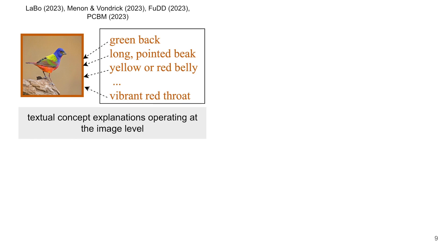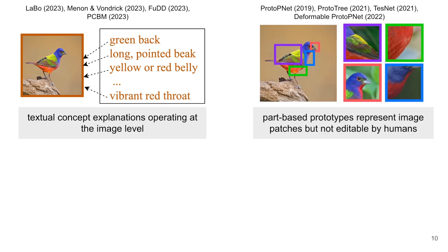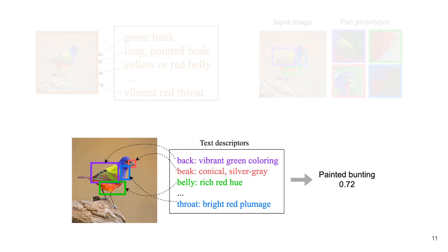Existing explainable AI methods either use textual concept explanations to match the entire image, or learn part-based prototypes that represent image patches, but such patches are not editable by humans. In this work, we ground each text part descriptor to a specific image region to enable grounded and editable text explanations while improving model accuracy.